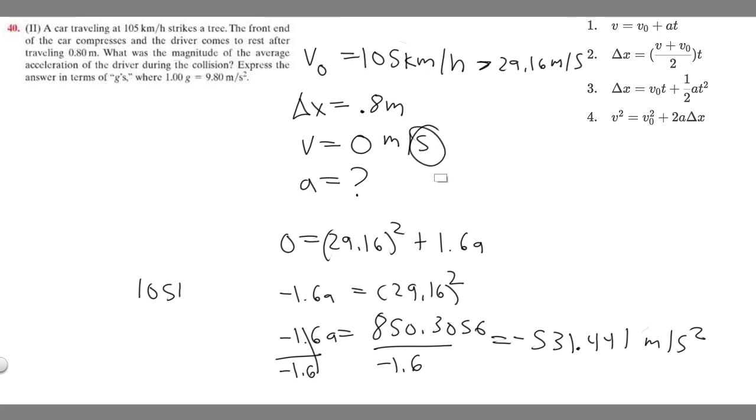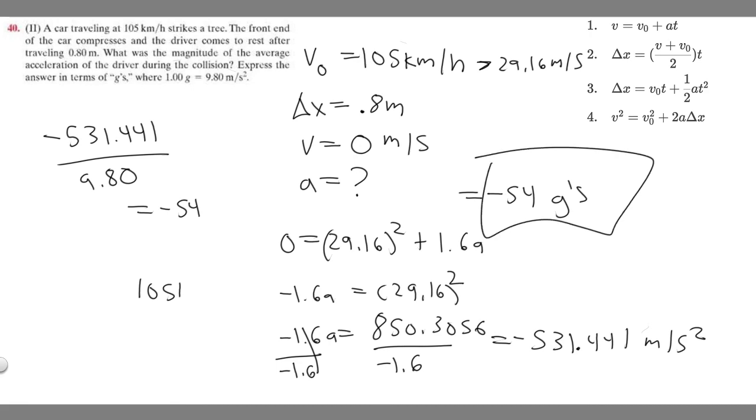But look at how they tell us to express our answer. They say express the answer in terms of g's. They tell us that 1g is 9.8 meters per second squared, so we got to take our number and divide it by 9.8 meters per second squared, and that'll give us the number of g's. So minus 531.441 divided by 9.8, you're gonna get minus 54.228. I'm gonna round to the whole g, round this to the whole number, so it's just going to be minus 54. So it's going to be minus 54 g's and so this is going to be your answer to this problem.